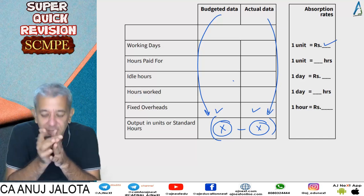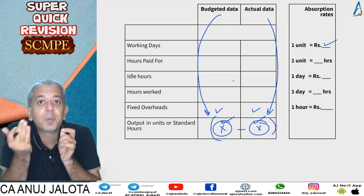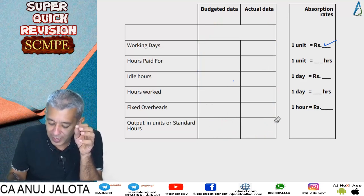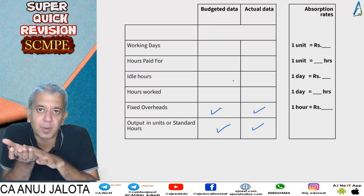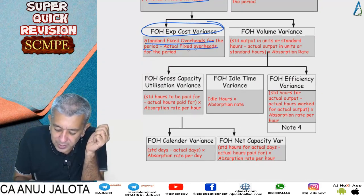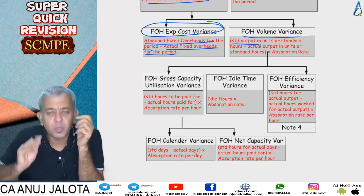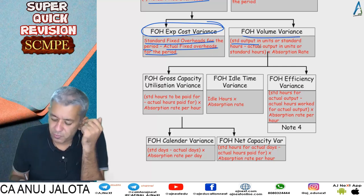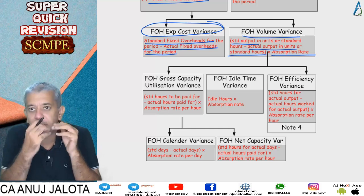If actual output is more than budgeted output, variance will be favorable — because producing more units causes fixed overheads per unit to fall. Fixed overheads expenditure variance = standard fixed overheads for the period minus actual fixed overheads for the period. Fixed overheads volume variance = (standard output minus actual output, in units or standard hours) × absorption rate.